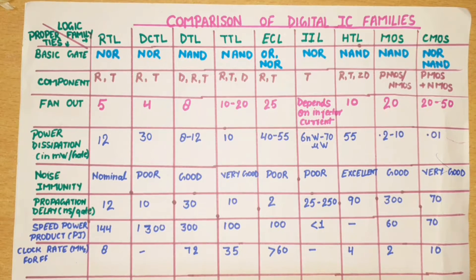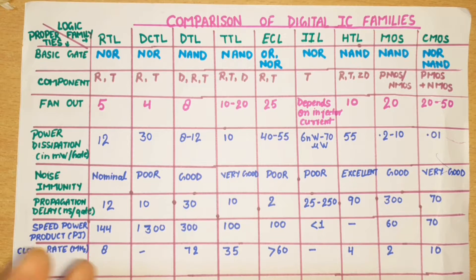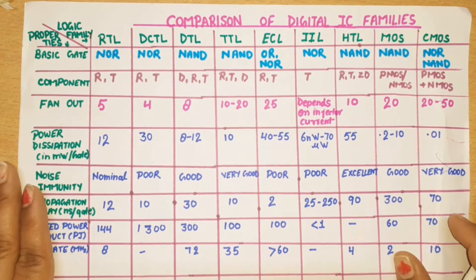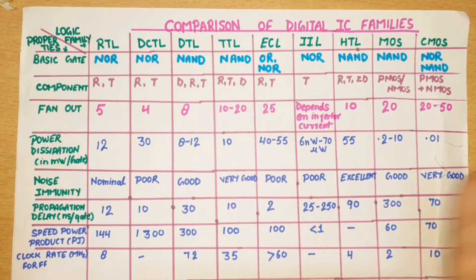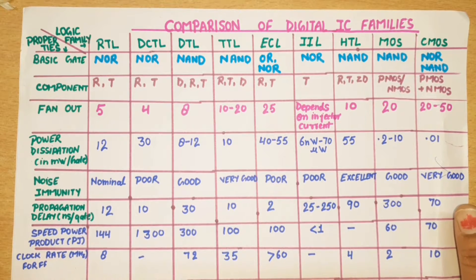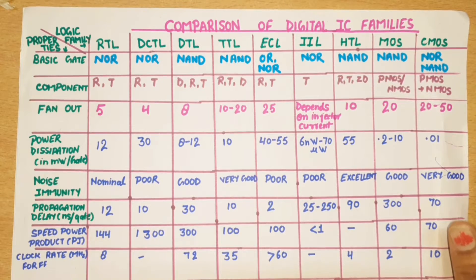In this video I am going to discuss the comparison of logic families. RTL, DTL, and ECL will be compared. I have taken the names of logic families which I commonly use, and the properties for comparison. Remember 4-5 properties — that is enough for your exam questions.